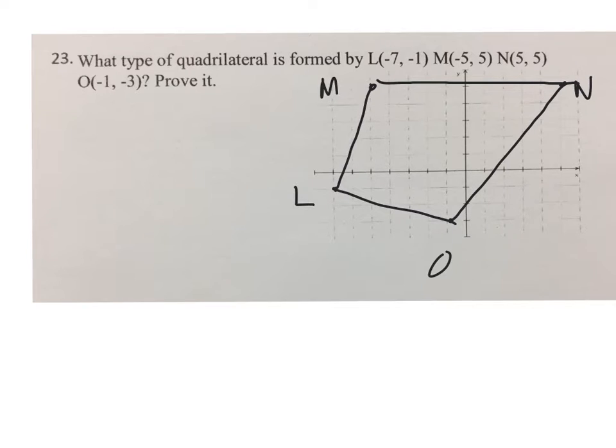Looking at it, we know that it's not a parallelogram, the opposite sides do not look parallel. It's not a trapezoid, we don't even have one set of sides that look parallel. So we're gonna maybe say that it's a kite.